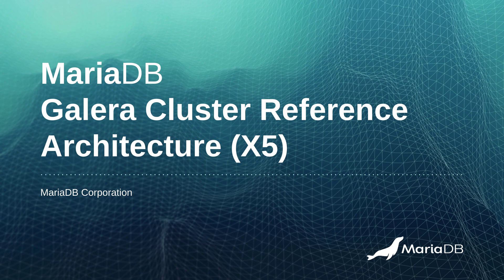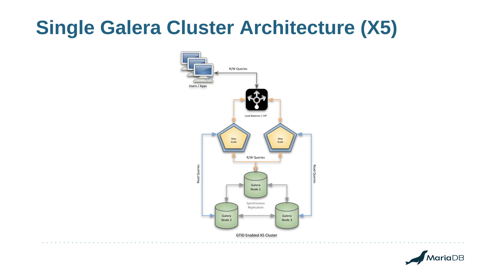The first thing we're going to look at is a single cluster on a single data center. The next couple of videos will cover setting up a Galera cluster with three nodes using native synchronous replication, with one MaxScale server that does read/write splitting for your cluster. MaxScale will automatically select a primary and replica node depending on which node is available, sending read and write queries to one node and read-only queries to the others.